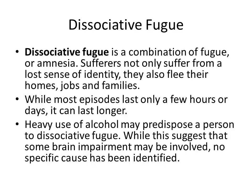The last type under dissociative disorders is dissociative fugue. Dissociative fugue is a combination of fugue and amnesia — sufferers not only experience a loss of identity but also flee from their homes, jobs, or families. While most episodes last only a few hours or days, they can last longer. This occurs after a really bad trauma or experience, where you literally forget who you are or your sense of identity. Heavy alcohol use may predispose a person to dissociative fugue, suggesting some brain impairment may be involved, though no specific cause has been identified — usually it is tied to trauma.